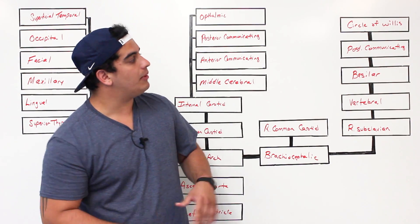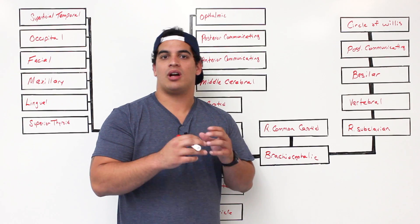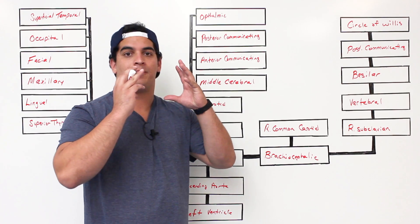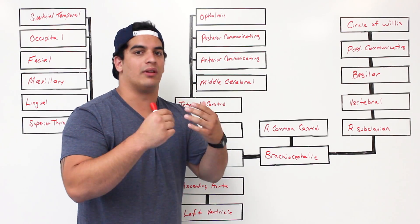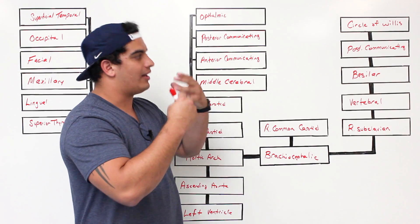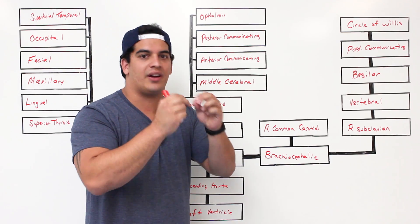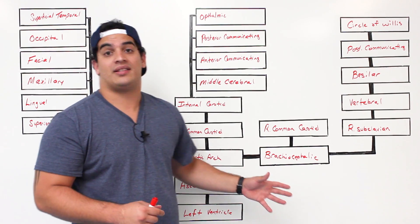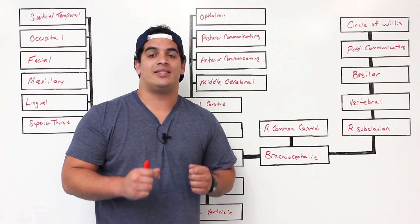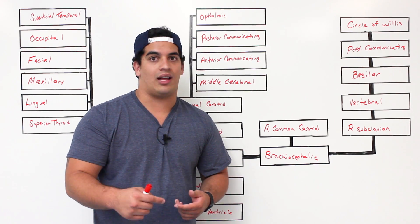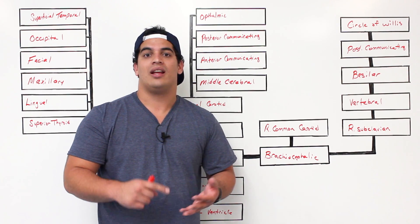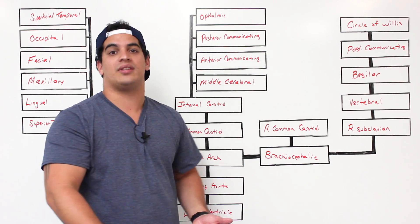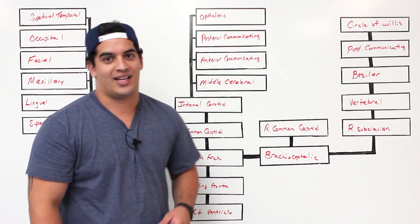That covers the most basic component of blood flow from the left ventricle up into the structures of the head and neck. We will go into more detail on the Circle of Willis to clarify all its branches. I hope this made sense — if you enjoyed it, please hit the like button, comment below, and subscribe. I'll step out of frame so you can jot all this down.